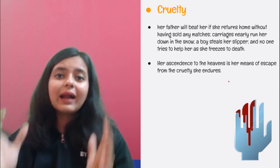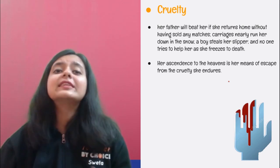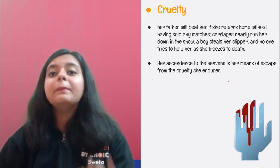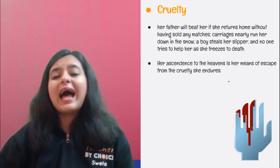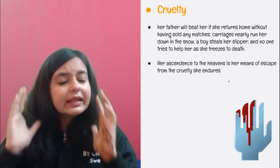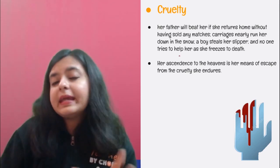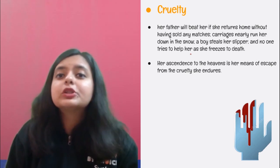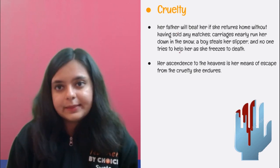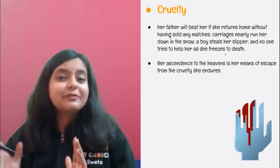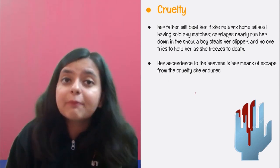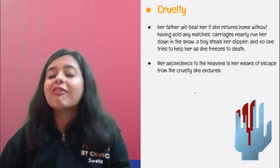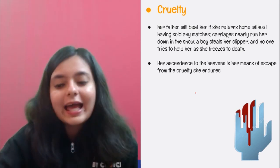Regarding cruelty, her father will beat up the child. During Victorian society, children were considered as miniature adults, so there was child labour because they were the earning members of the society. If they failed to earn, they would be beaten up. In lower strata of society, children are still considered earning members. No one tries to help her, and finally she freezes to death. Her ascendance to the heavens is her means of escape from the cruelty of the harsh world, and the author suggests that the afterlife she will have is definitely going to be rewarding for her.